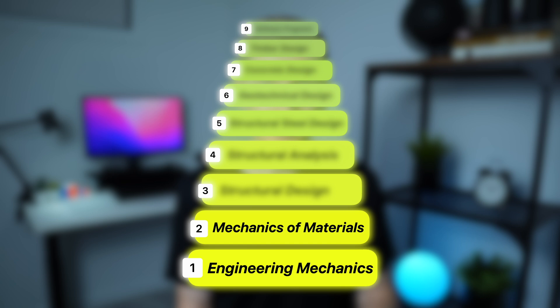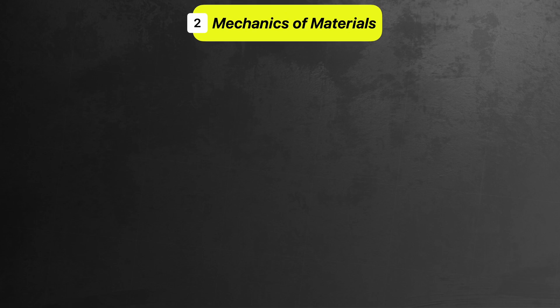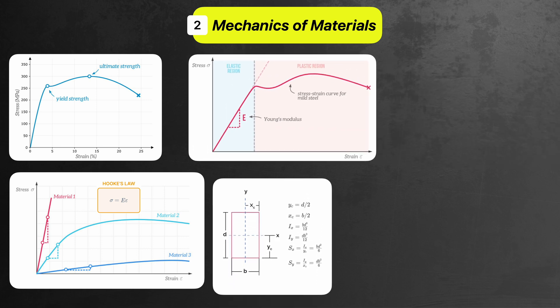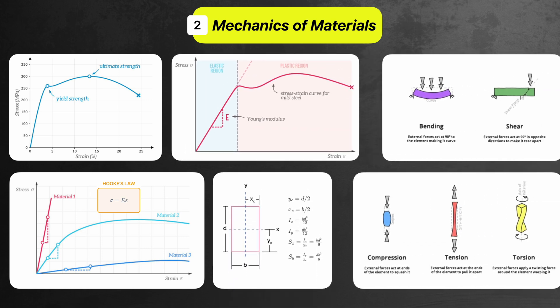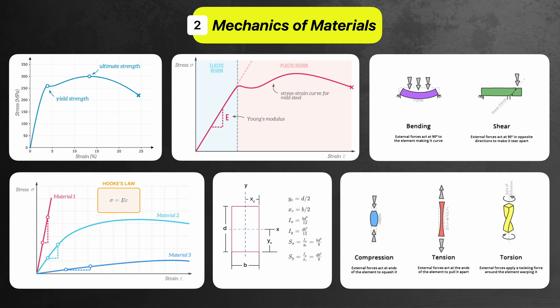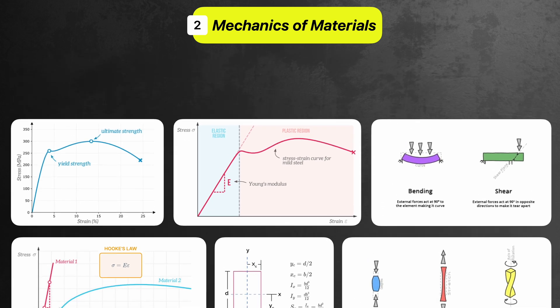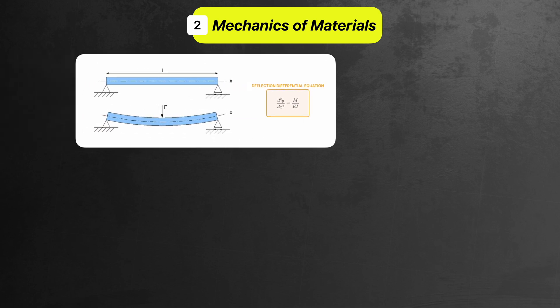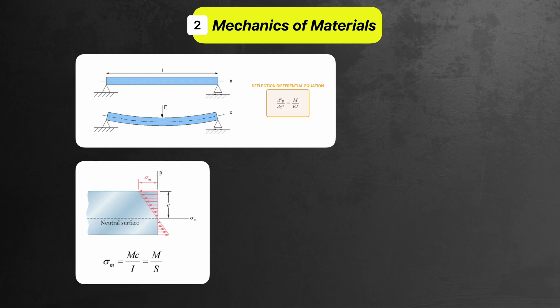Next up is mechanics of materials, and this is all about understanding how materials behave when you apply forces to them. You're going to need to focus on things like stress and strain and how they relate to each other using Hooke's law, Young's modulus and the section modulus, different types of internal forces like axial, bending, shear and torsional stress, and how these forces cause different types of deformation. You'll also need to learn how to calculate a beam's deflection, the flexure formula, and some advanced topics like combined stress and column buckling — even if you don't go deep into those right away, it's worth knowing they exist.